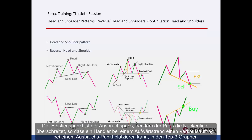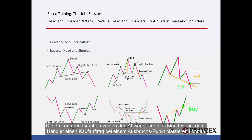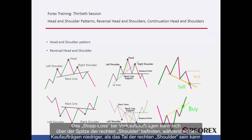Entry point is the breakout price where price crosses the neckline. Thus, in an uptrend, a trader can place a sell order on a breakout point on the top three graphs. The three bottom graphs show a downtrend market, in which traders can place a buy order on a breakout point. Stop loss on buy orders can be over the right shoulder peak, while it can be lower than the right shoulder valley.